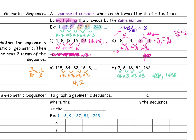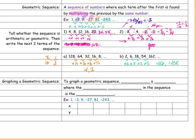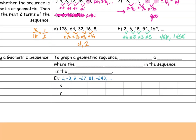We're going to talk about graphing a geometric sequence. To graph a geometric sequence, we create a table just like we did with arithmetic sequences, where the term's position in the sequence is the x value. That means my sequence values are my y values.